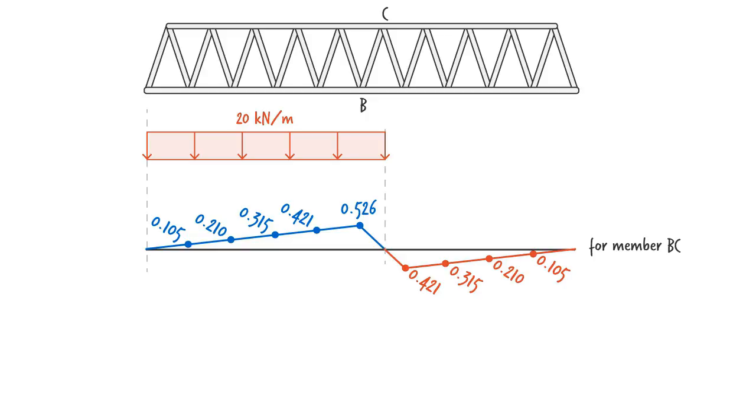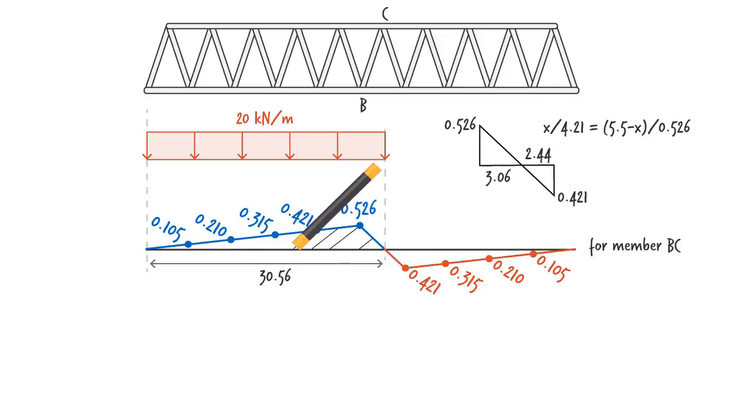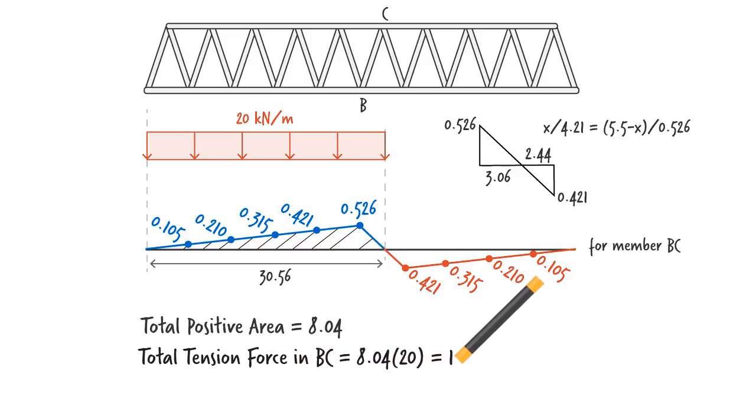To determine the positive area, we need to calculate this distance, which requires determining this smaller distance. Note that here we have two similar triangles. We can use the base-to-height ratios to determine distance x, which enables us to calculate the total base of the positive area. Now we can calculate the total positive area under the influence line. This gives us a maximum tensile force of 161 kilonewtons in the member.